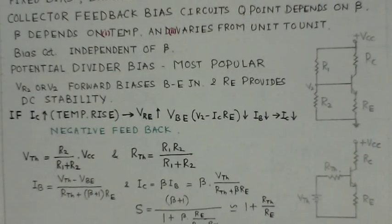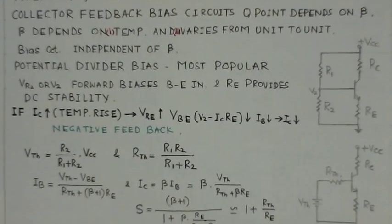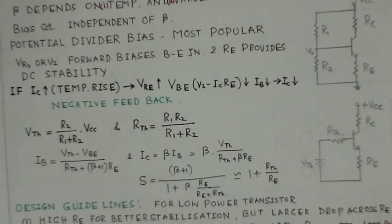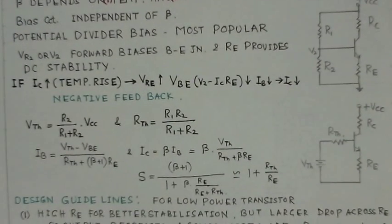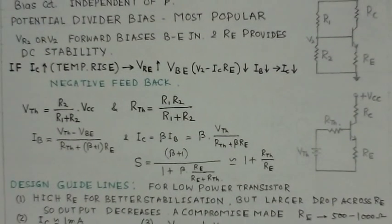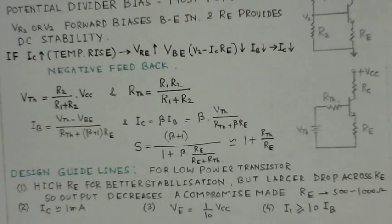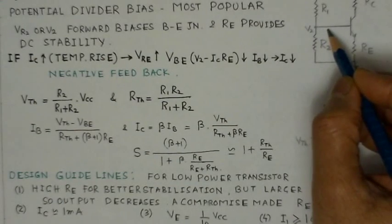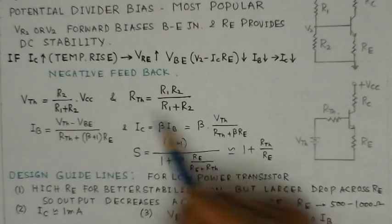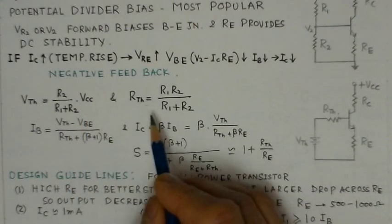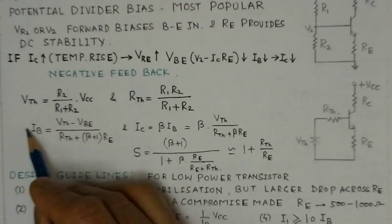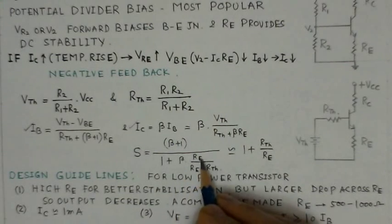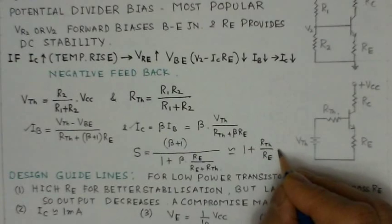This bias circuit is also analyzed using Thevenin's equivalent at the input side. V_Thevenin equals R2 divided by (R1 + R2) times VCC, and R_Thevenin is the parallel combination of R1 and R2. From this, the values of IB and IC can be found. The stability factor works out to (beta + 1) × (1 + RE/(RE + RTH)), which approximates to a manageable value.